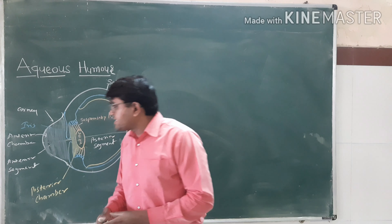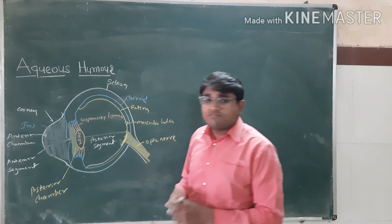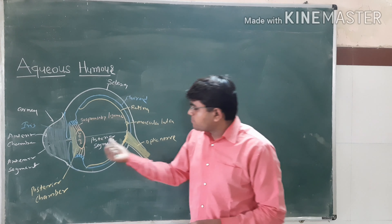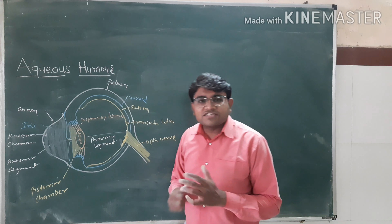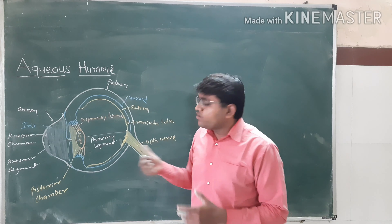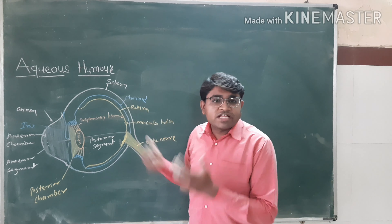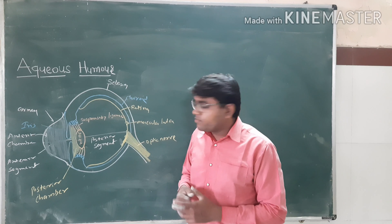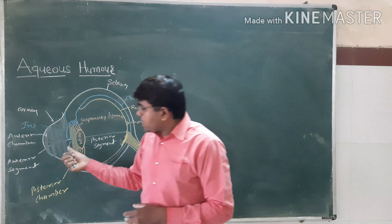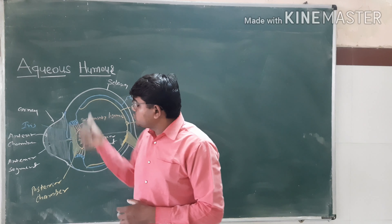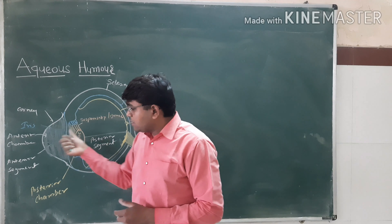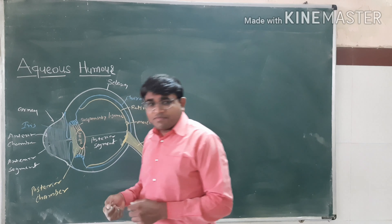This anterior segment is filled with the aqueous humor, whereas the posterior segment is filled with the vitreous body or vitreous humor. So the aqueous humor is present in the anterior segment.